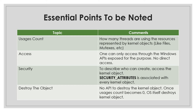There are a few essential points to note regarding kernel objects. The first is the usage count. Usage count represents how many threads are using the resources represented by the kernel objects — like files, mutexes, or semaphores. Suppose there is a file and three processes are trying to access it. They must acquire the kernel object to synchronize access, so the usage count for that kernel object will be three.